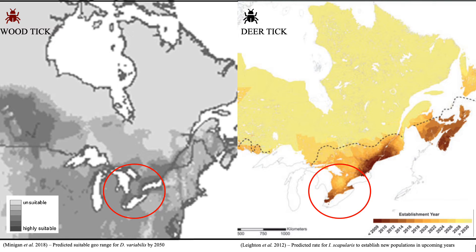Here I have the current and predicted geographic ranges for both tick species. Both species are currently established in southeastern Ontario, though the deer tick's range is more concentrated in the south. Both species are expanding northward, with the deer tick expected to establish populations in northern Ontario in the next five years. For this reason, deer ticks are of special interest to my project, as they are considered the newcomer to Ontario and can be extremely harmful to humans.